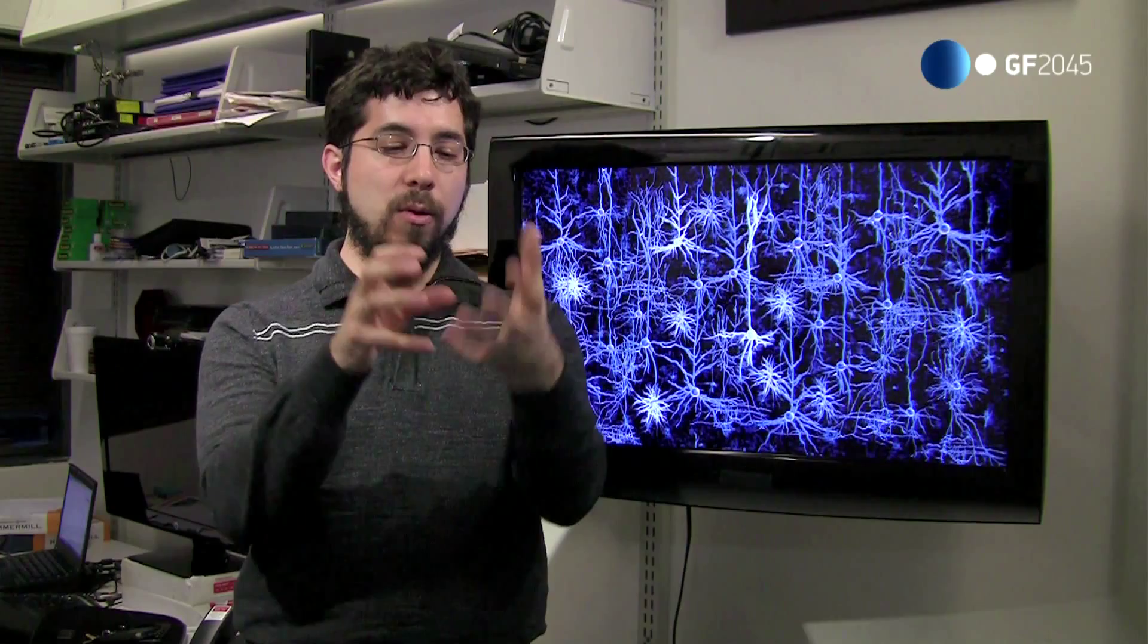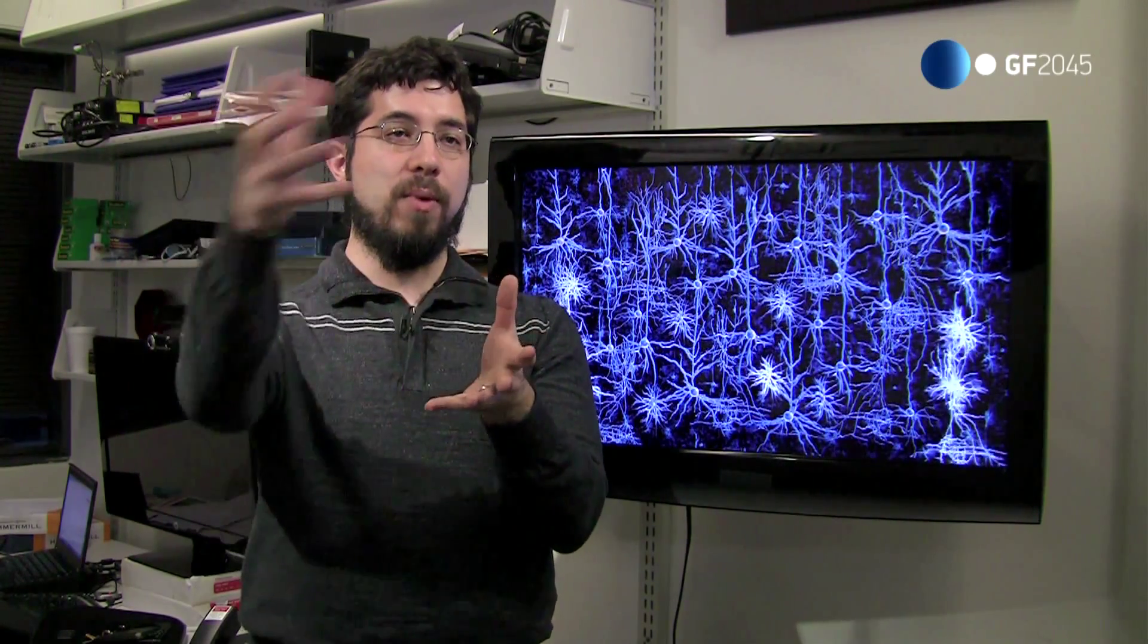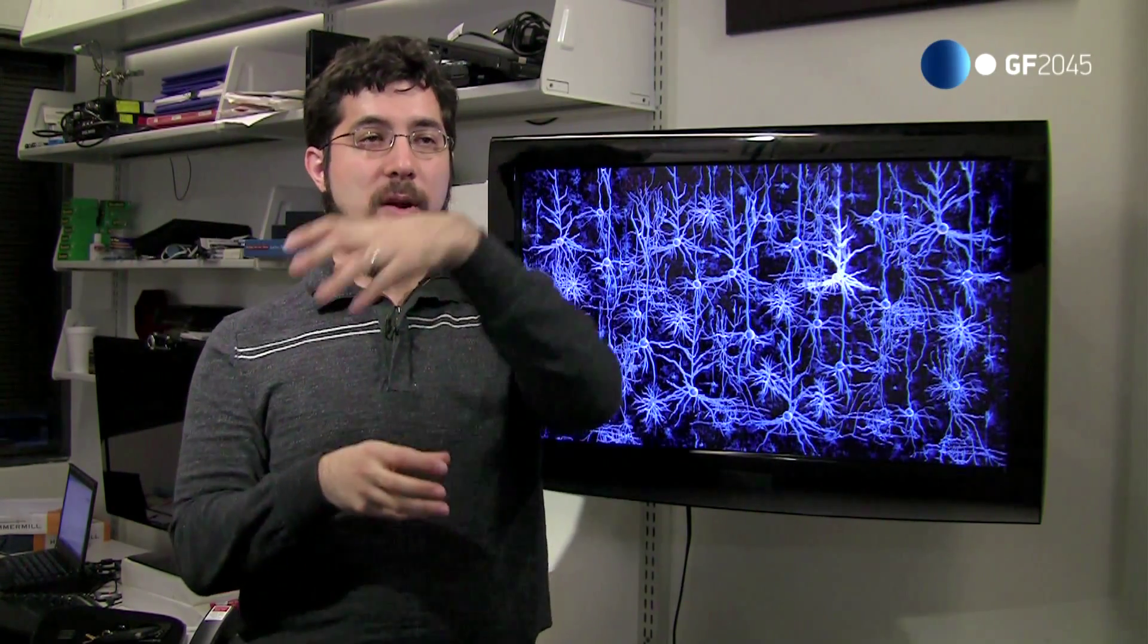So suppose that if you lose a brain structure due to Alzheimer's or stroke, you can replace that by a computer. What happens if you start to replace other structures as they're lost by computers? What happens? Is there a convergence point where suddenly you find yourself running the brain on a computer?